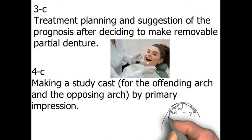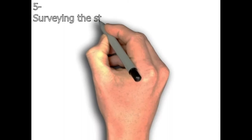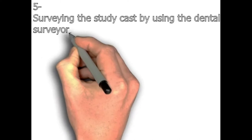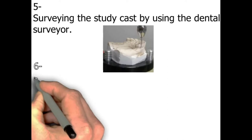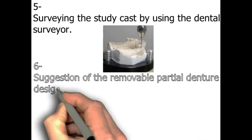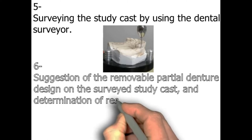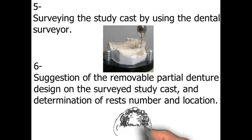Step number five: surveying the study cast by using the dental surveyor — the picture shows the master cast and dental surveyor. Step number six: suggestion of the removable partial denture design on the surveyed study cast and determination of rest number and location — that's a clinical step.